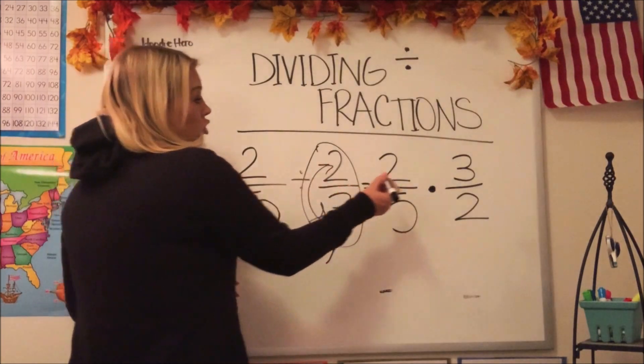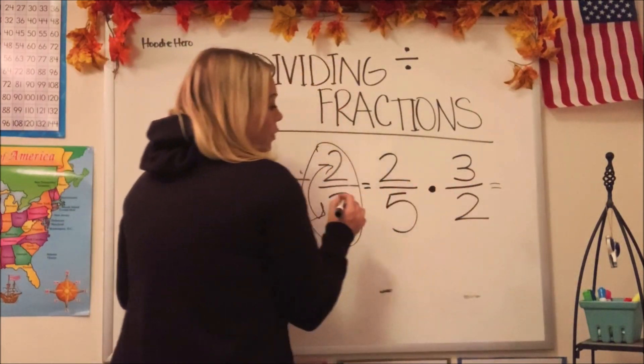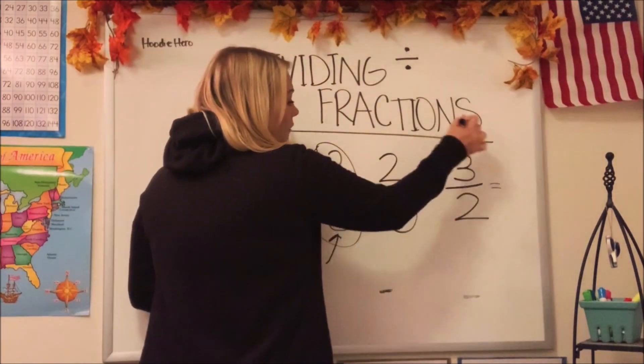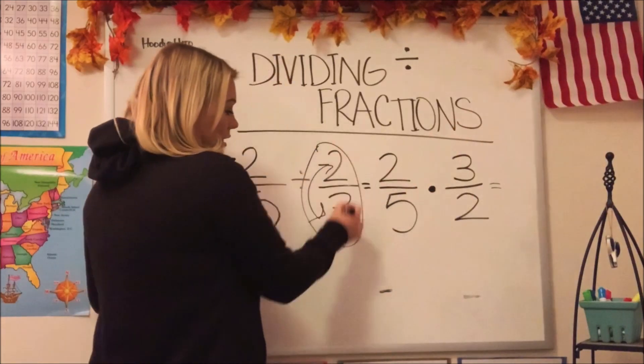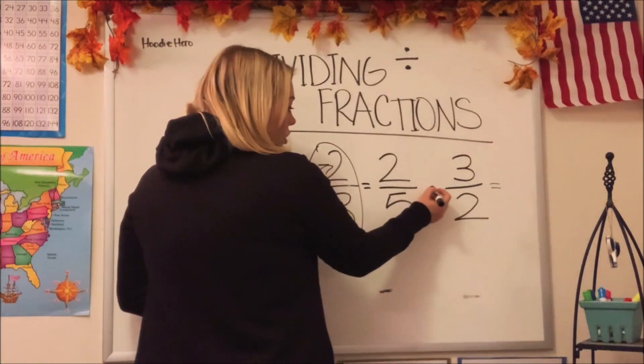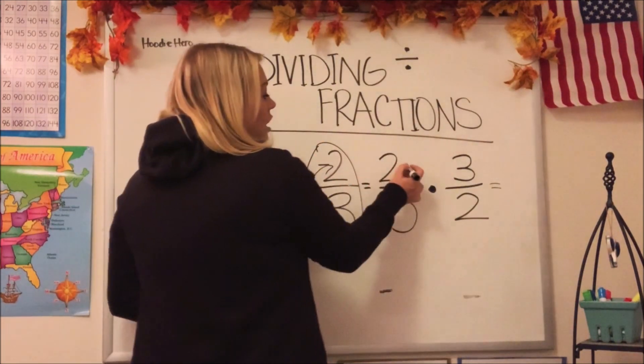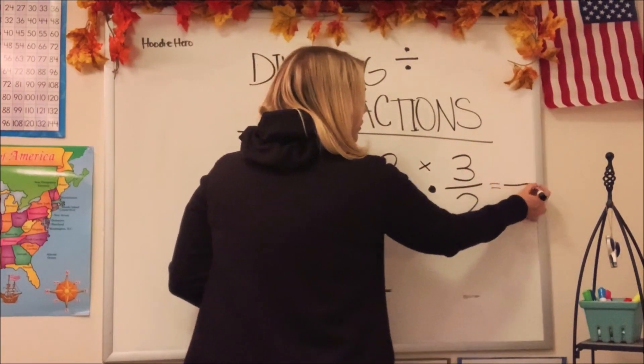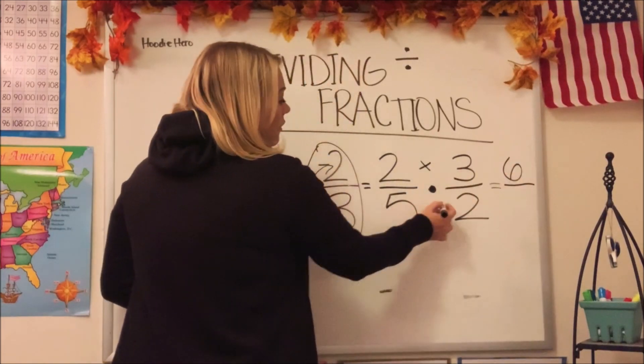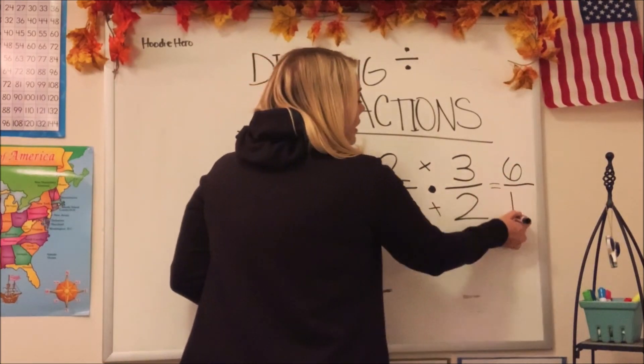So let's go ahead and do that with this one. We went ahead and flipped or reciprocated the second fraction, changed the division to multiplication, and now we just go straight across. So two times three is six, and five times two is ten.